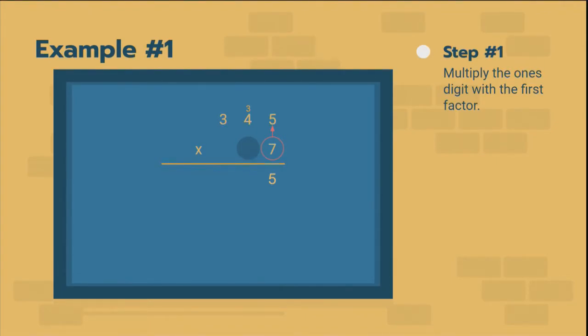But we're not done with the seven. We now have to multiply the seven times the four. So seven times four is 28. And we add our carry. 28 plus three is 31. We still have to multiply the seven times the three. So seven times three is 21. Plus the three up above is 24.